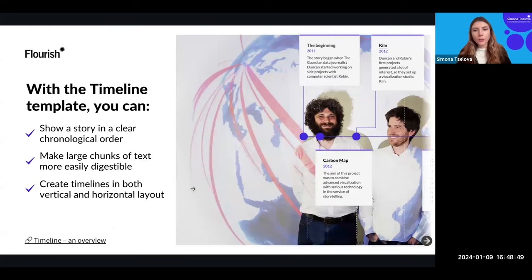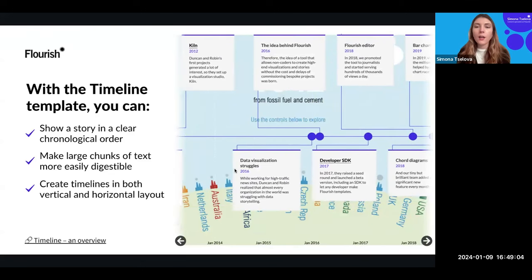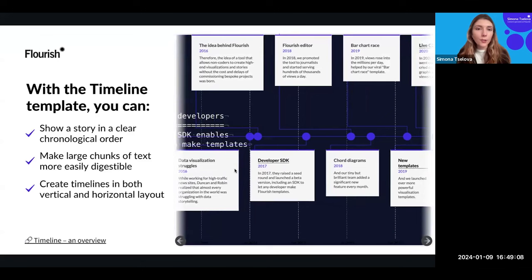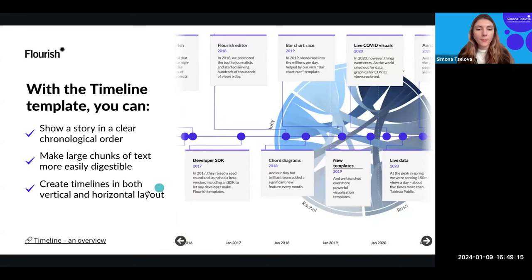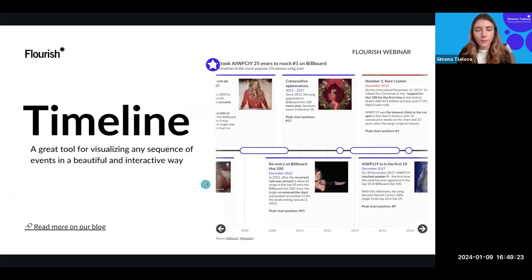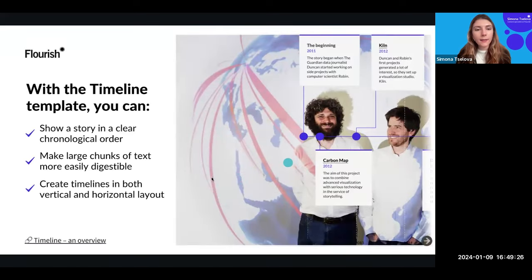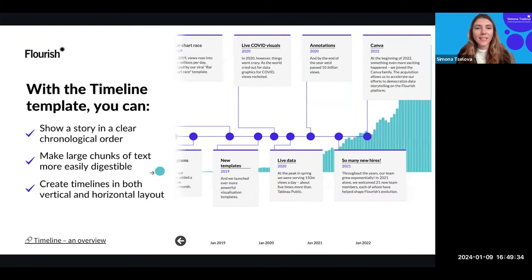The timeline can be created in two layouts: horizontal (scrolling left and right) or vertical (scrolling up and down). You can also make large chunks of text much more digestible as a standalone interactive piece of content by providing background images or images within the pop-ups. We've added GIFs within the content itself, and you can add images in the little circles. You can customize everything, including color by category.